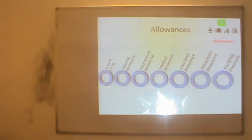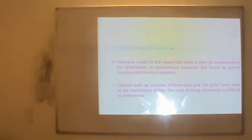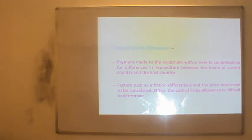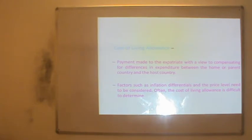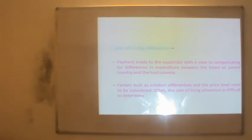Next we have allowances, a very important component of international compensation. Cost of Living Allowance (COLA) is paid to expatriates depending on the place where they are living and the cost of living there. For example, in the USA, a person working in California would get a higher COLA compared to someone working in New Jersey, because the cost of living is higher in California. The COLA amount differs based on the cost of living of that place.